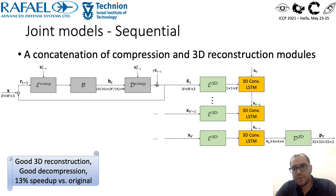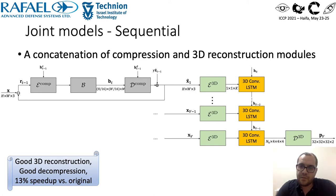Now I'll present our three proposed joint architectures. The first one we call sequential is a concatenation of the previously shown networks. The input to the 3D reconstruction are decompressed images. This approach obtains good 3D reconstruction and decompressed image quality, but is not very efficient.